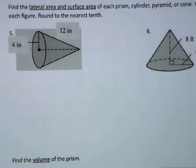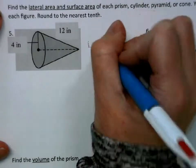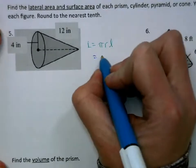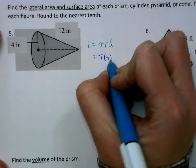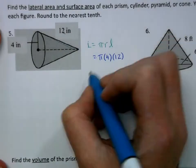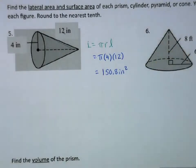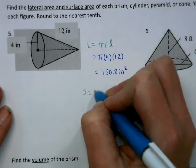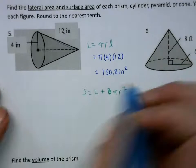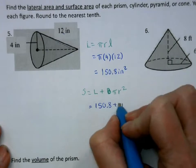Next we have a cone. The lateral area of a cone is πrL, where L is the slant height. Our radius is 4 and the slant height is 12, giving us 150.8 inches squared for the lateral area. For the surface area, we take the lateral area and add on the base, which is a circle — πr². So this will be 150.8 plus π times 4 squared.